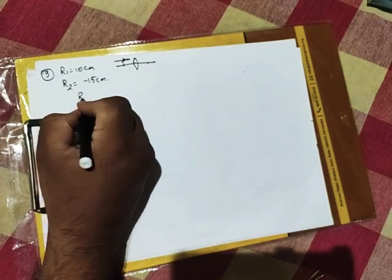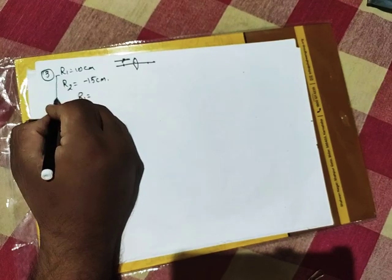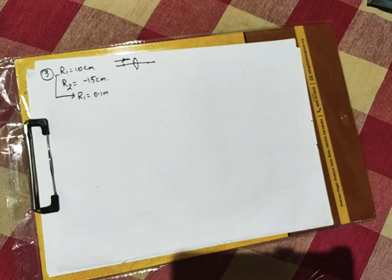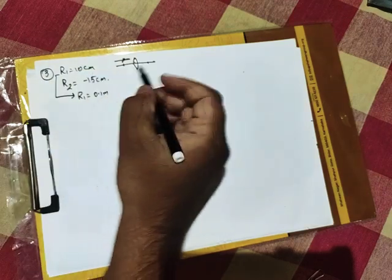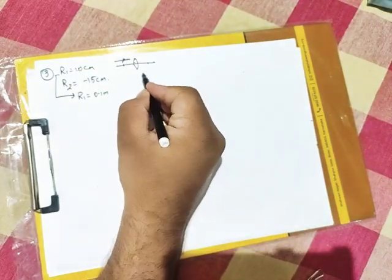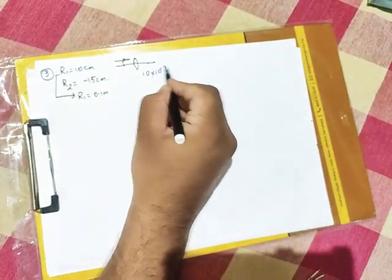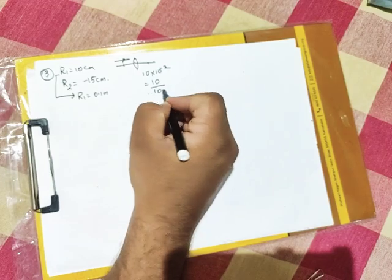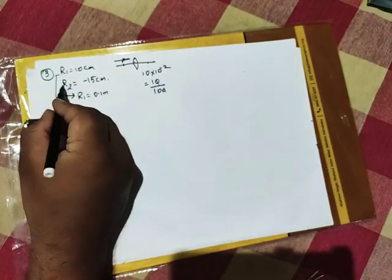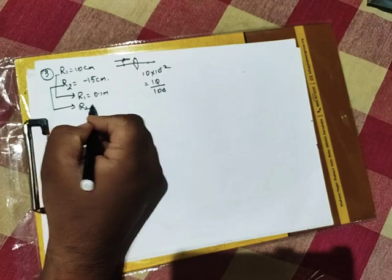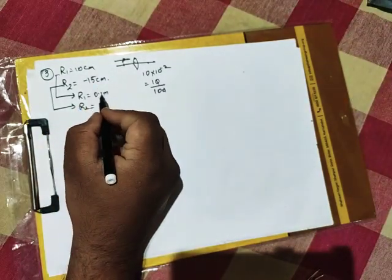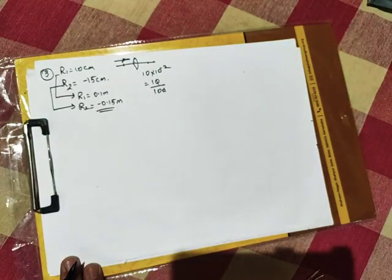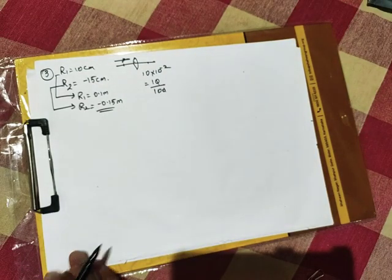That can be rewritten. R1 can be written as 0.1 m, cm to meter conversion. Centi means 10 power minus 2. 10 into 10 power minus 2. 10 divided by 1 by 100 becomes 1 by 10 is 0.1. Similarly, R2 will be minus 15 centimeter, so minus 0.15 meter. So that is your basic data.